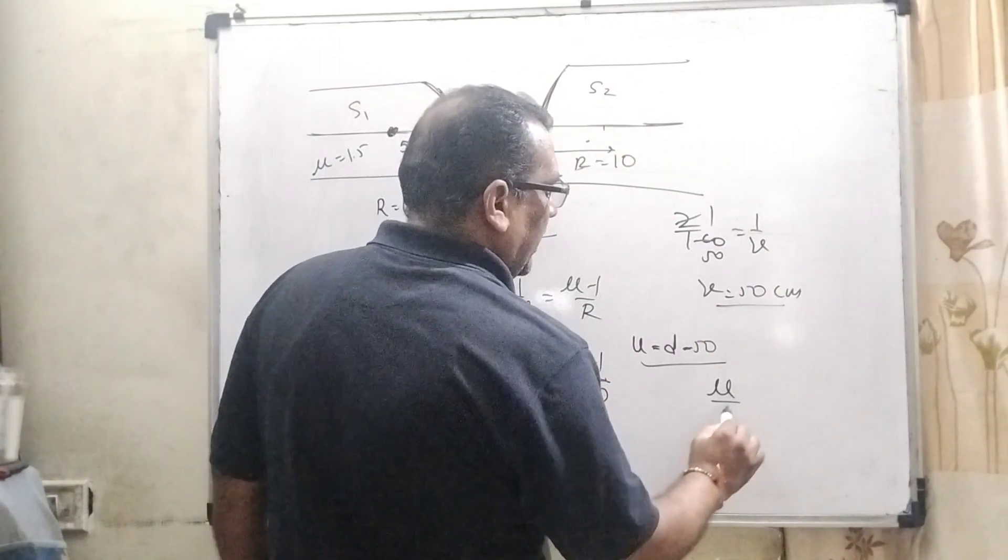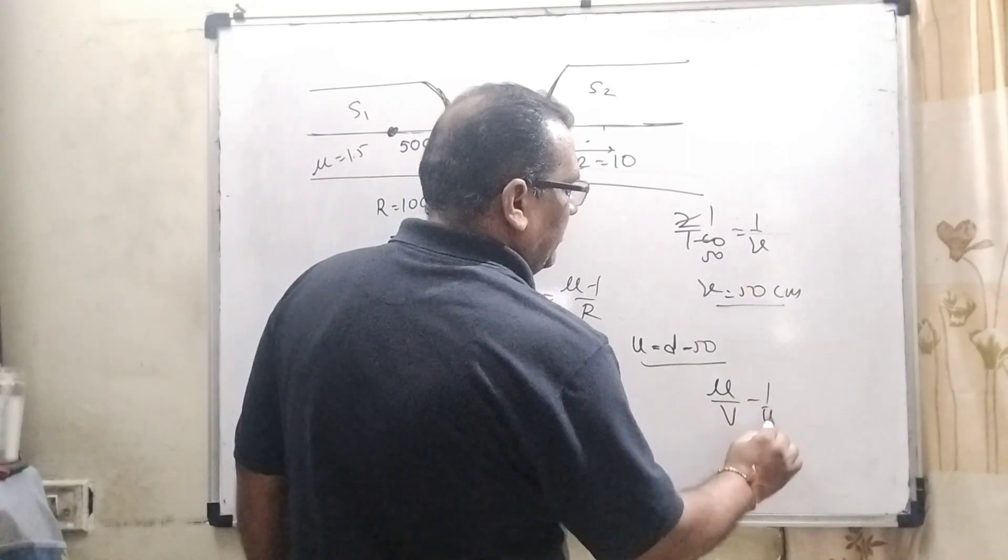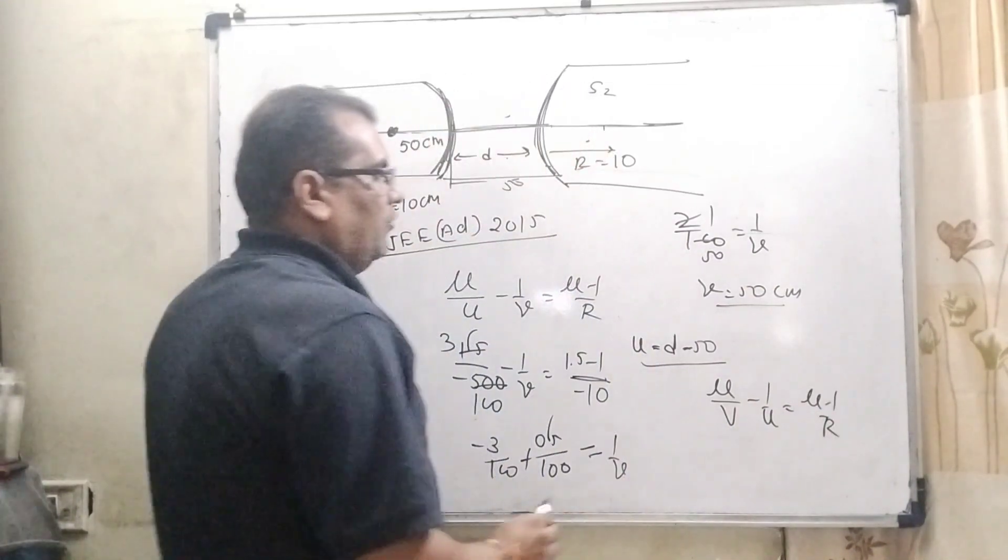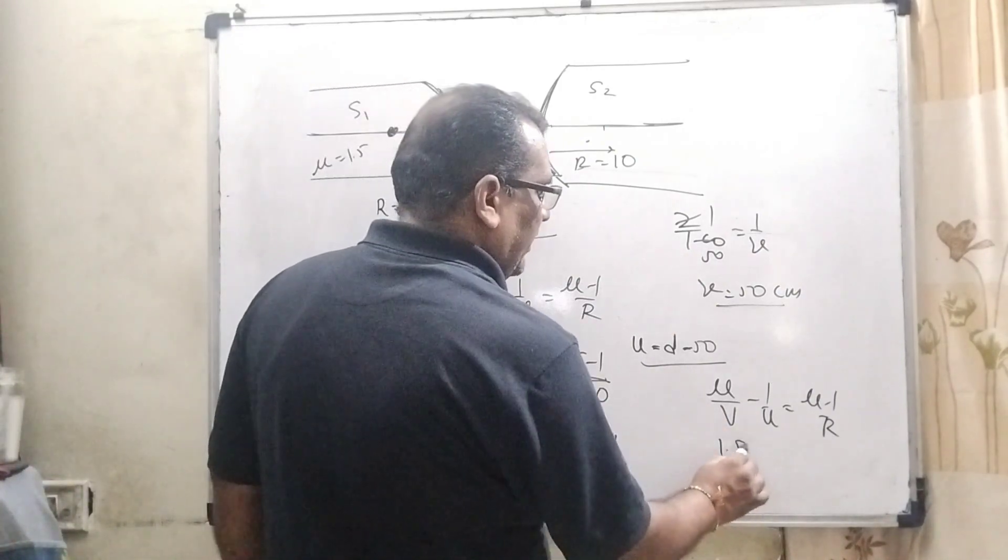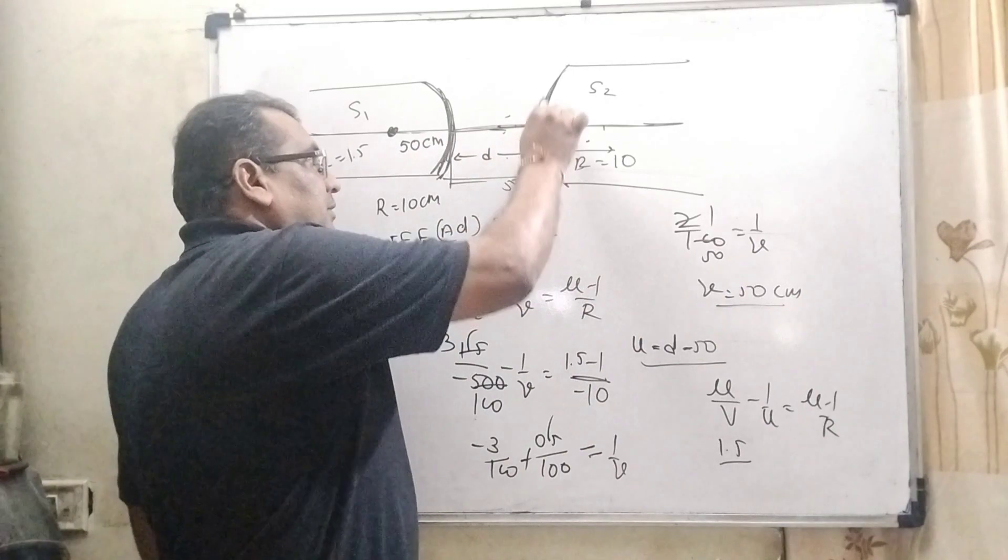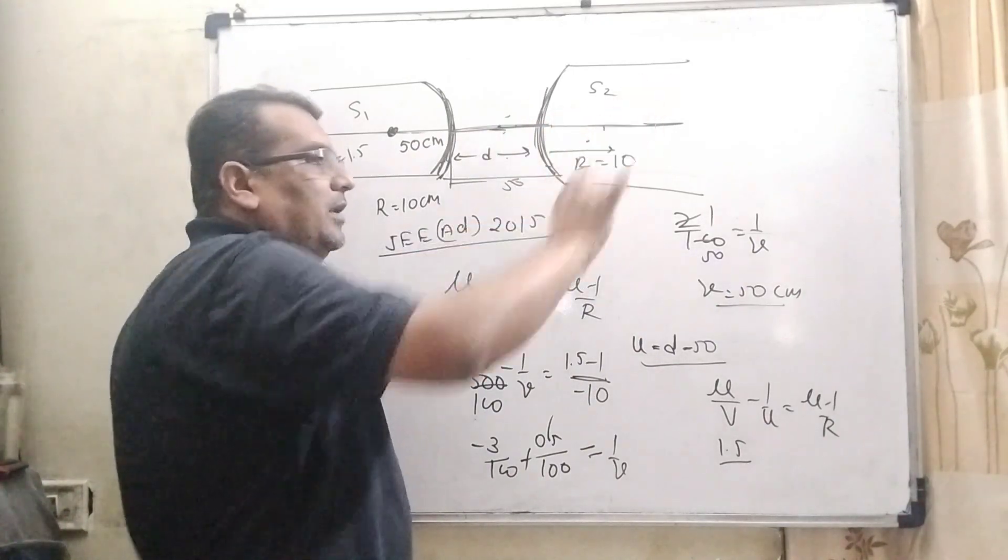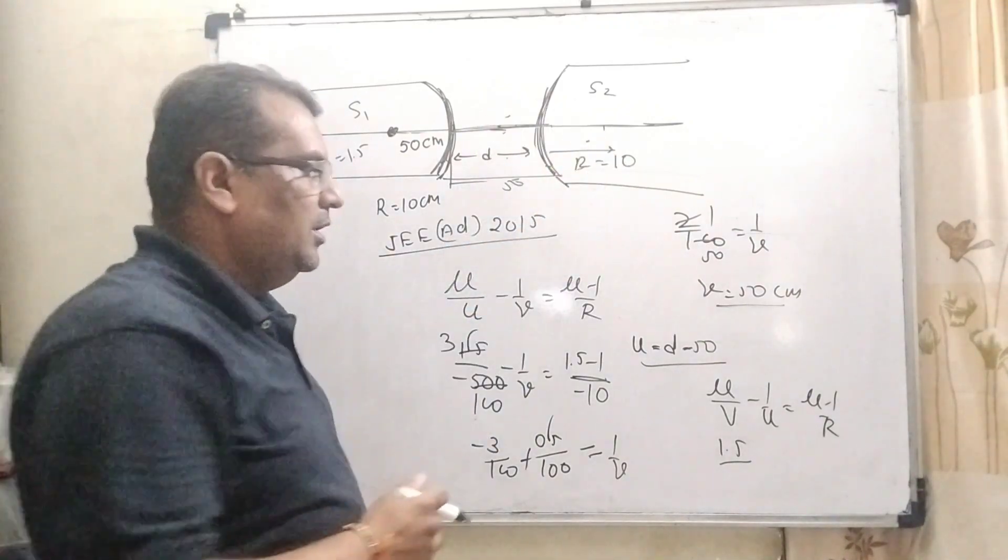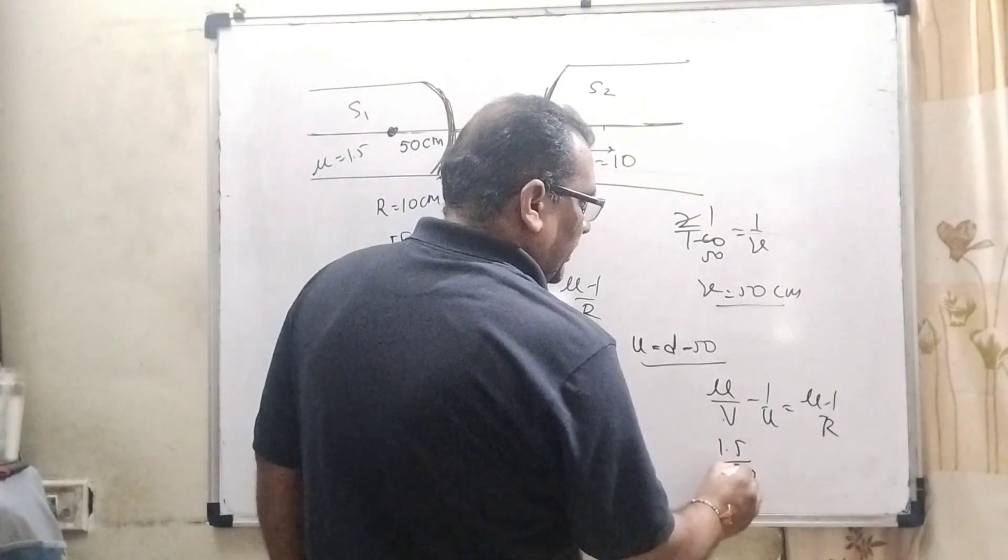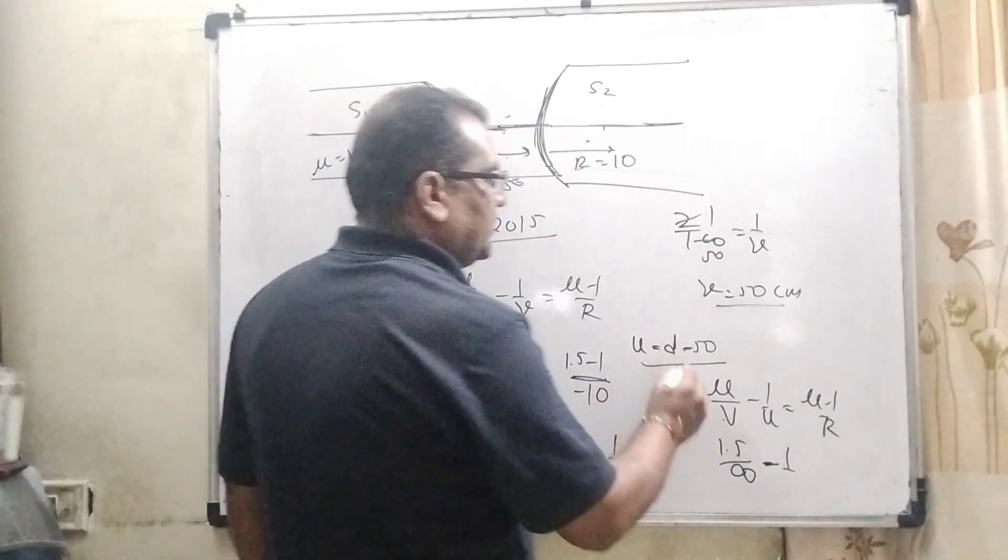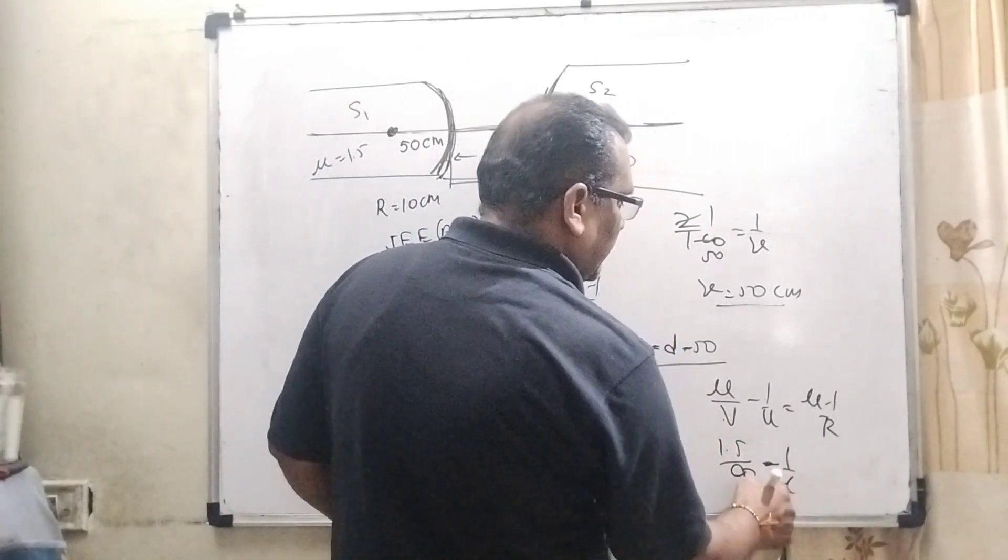So, formula becomes μ/V - 1/U = (μ-1)/R. And what is μ? That is 1.5. And V becomes here - after refraction becomes parallel. What does it mean? It means object forms or image formed at infinity. So, V can be put here infinity minus. And here D minus 50 by using sign convention rule. So, minus is also used.